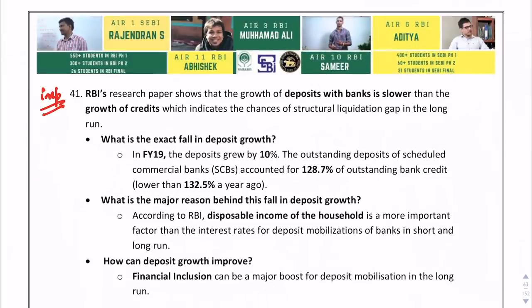RBI's research paper on bank deposits found that deposits with banks are growing slower than credit growth. Deposits grew by 10%, and outstanding deposits of scheduled commercial banks accounted for 128.7% of outstanding bank credit, down from 132.5% a year ago.